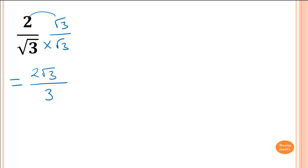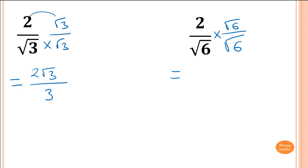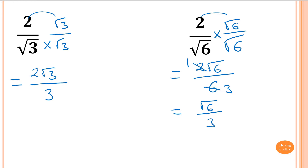Rationalizing the denominator means you want to get rid of the surds down the bottom. It's an irrational number down the bottom, and we want to get rid of it by multiplying by itself so it gives a rational number. So for this question: 2 over square root of 6. I multiply by square root of 6 on top and bottom. The top: 2 times root 6 is 2 square root of 6. And square root of 6 times square root of 6 is 6. Of course, we're not finished — you have to simplify. Because 2 over 6, both are divisible by 2: divide by 2 gives 1 on top, divide by 2 gives 3 on bottom. So the answer is root 6 over 3.